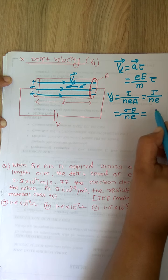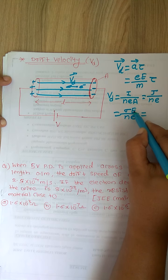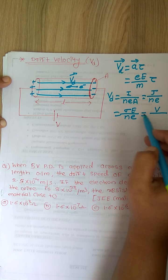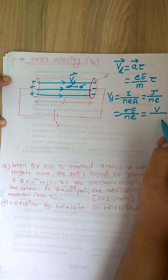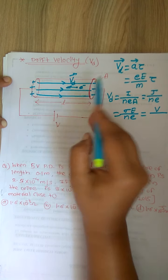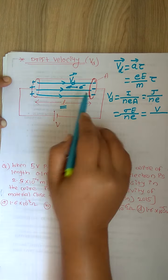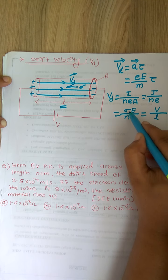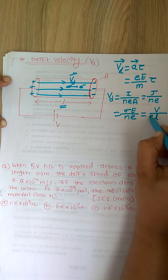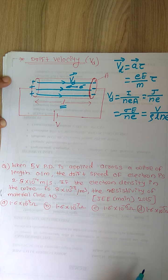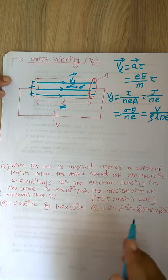We can also write E, the electric field, as potential difference V divided by the distance between the two ends — that is, the length L of the conductor. So E equals V over L. Also, sigma equals 1 over rho. This gives us another form: drift velocity equals V divided by rho times L times n times e.